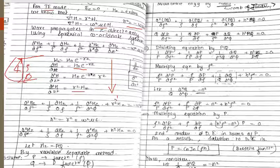Substituting this result into the wave equation, and using the variable separable method, we write the transverse field as xz equals P times Q, where P is a function of rho and Q is a function of phi — analogous to how ez was written as X times Y in the rectangular waveguide. Substituting PQ and pulling constants outside, we can separate the equation.